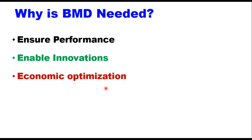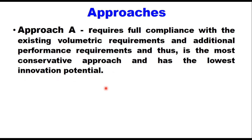Balanced mix design allows for the optimization of mixes in terms of cost-effective material use and performance. Without knowing the true performance of mixes, decisions on material use will likely be made based on assumptions, past experience, or current specification limits. A total picture will only emerge when you know how a mix will perform in the field. There are four approaches of balanced mix design. Approach A requires full compliance with the existing volumetric requirements and additional performance requirements.